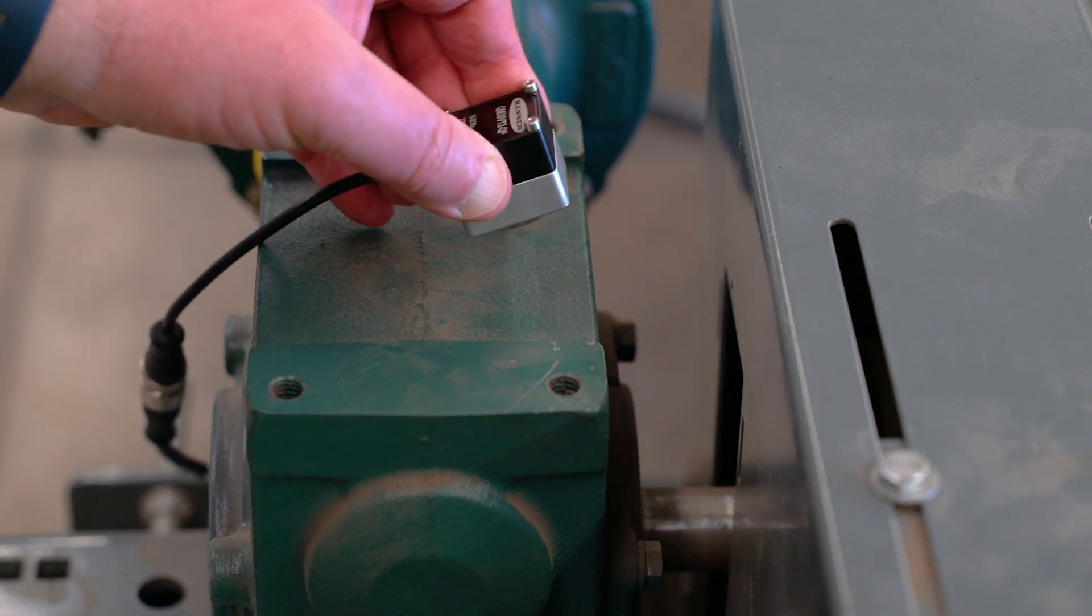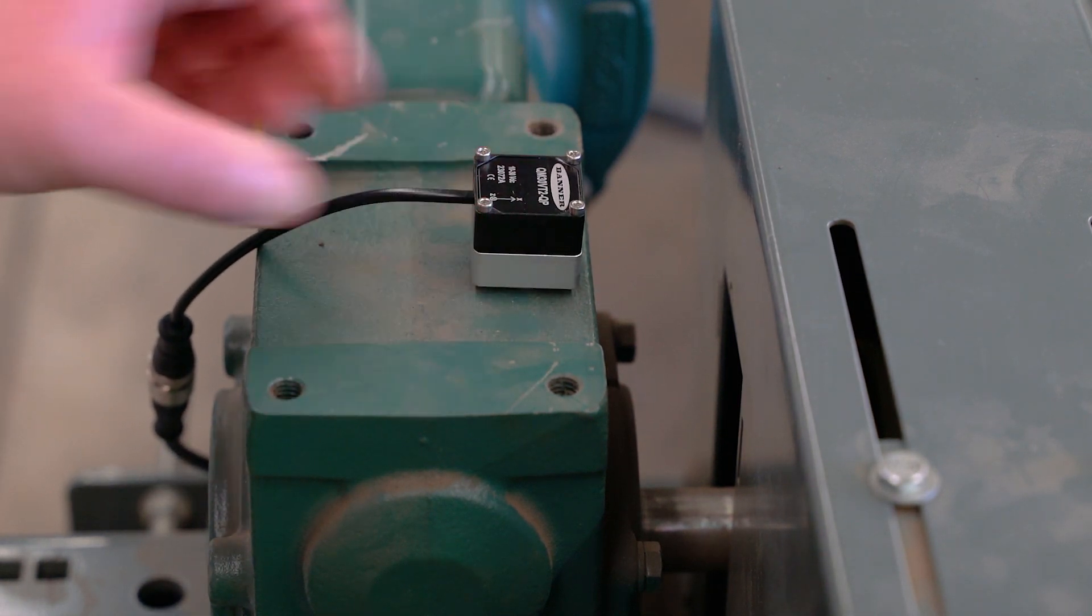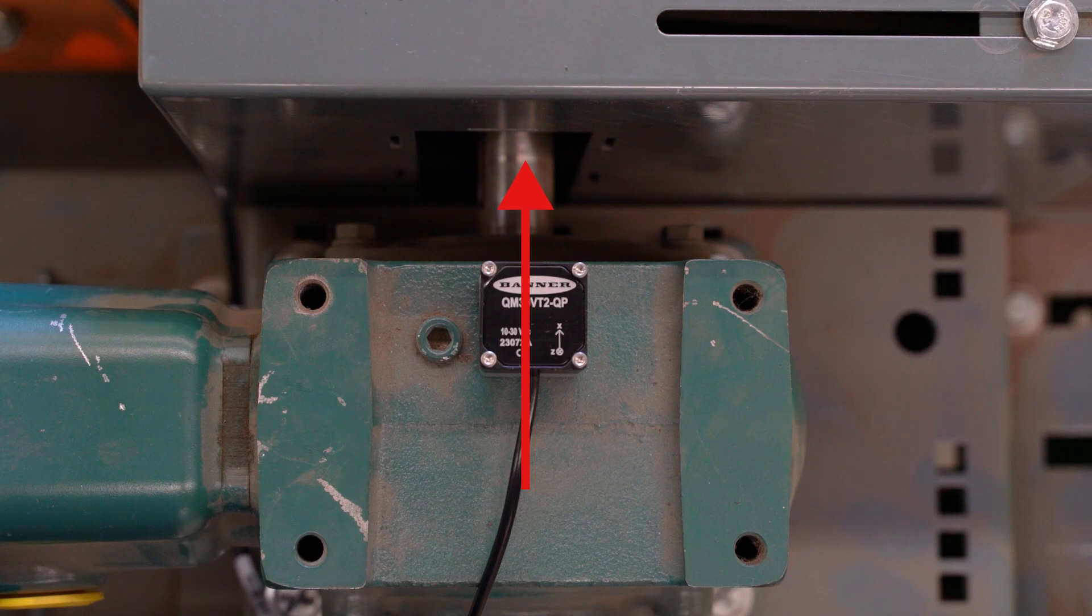Similarly, when mounting the sensor to a gearbox, you should ensure that the x-axis is parallel to the output shaft.